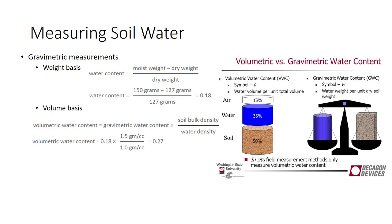It is often more useful to calculate water content on a volume basis. This can be solved by making a weight determination and converting it to volumetric water content using soil and water densities, density being mass per volume. The equation for the conversion is: volumetric water content equals gravimetric water content times soil bulk density divided by water density. The density of water is 1.0 grams per cubic centimeter. In the previous example, if the bulk density of the soil sample were 1.5 grams per cubic centimeter, the water content by volume would be 0.27.